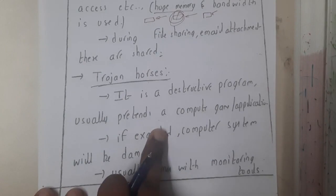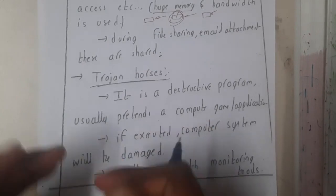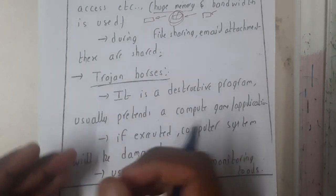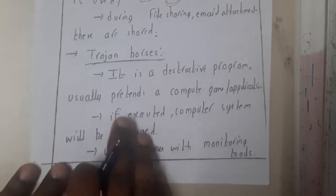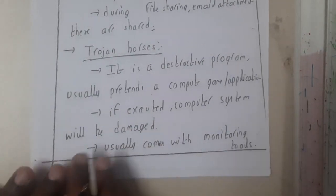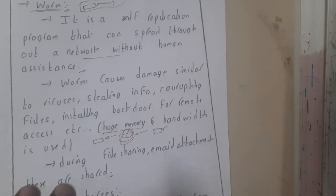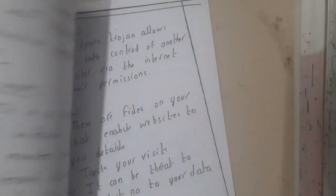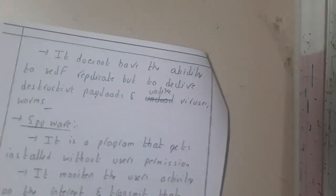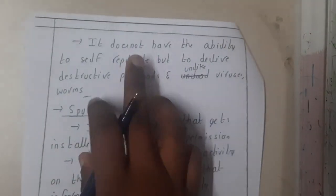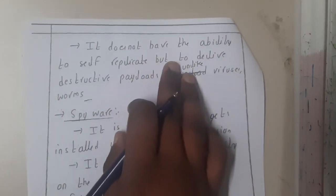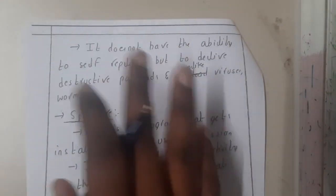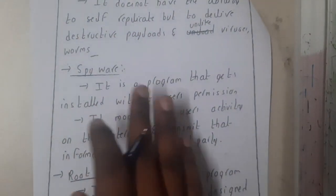A Trojan horse is a destructive program that pretends to be a game or application on your computer. You install it thinking it is a regular application or game, but indirectly it is a Trojan. If executed, the computer will be damaged — it usually comes with monitoring tools. Sometimes cleaning applications that appear via ads may contain these. The key advantage is that a Trojan does not have the ability to replicate itself.